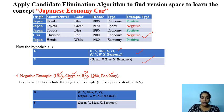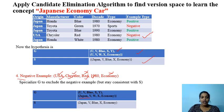Using the general-to-specific algorithm, we apply appropriate specialization to the attributes U, V, W, X, and Economy. We refine attribute U as Japan. Using this hypothesis, we can reject the fourth instance while still accepting instances 1 and 3. Checking with S: Japan and USA are getting rejected, so no change is required for S.